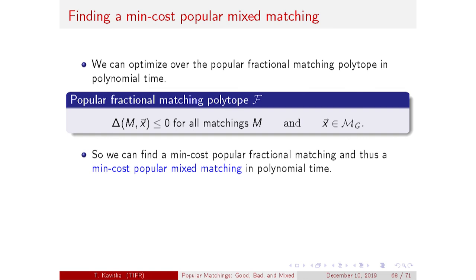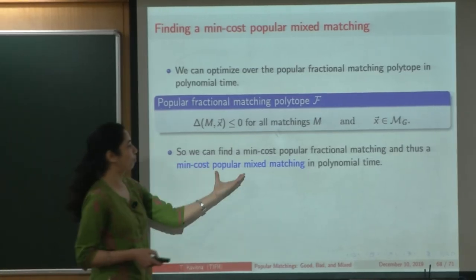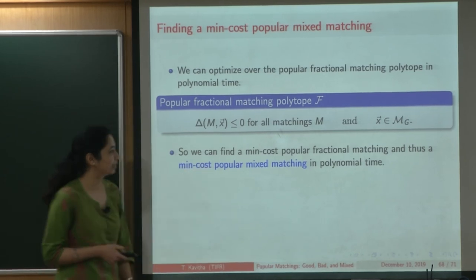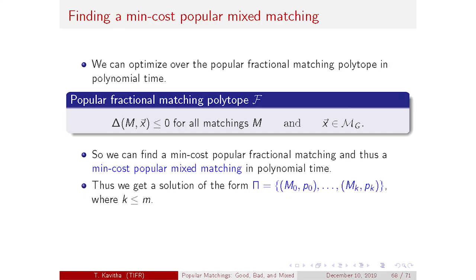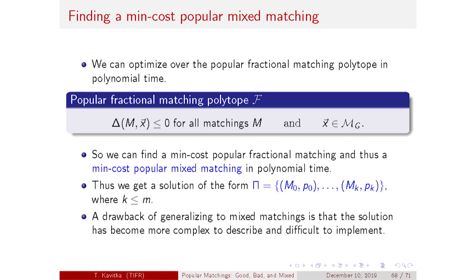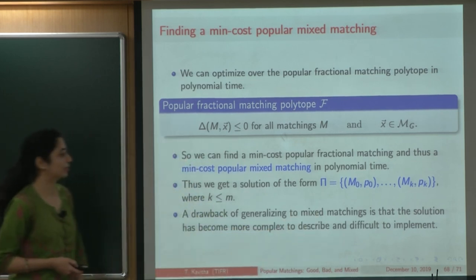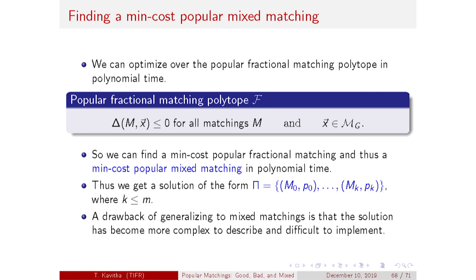When we generalize from popular matchings to popular mixed matchings, we regain tractability. However, we get an optimal matching that is a set of matchings with associated probabilities — a lottery. We wanted one matching and ended up with a bulky set. Implementing this requires access to random bits, which is the price we pay for tractability. Though tractable, the solution has become more complex to describe and difficult to implement.